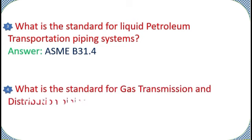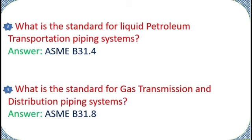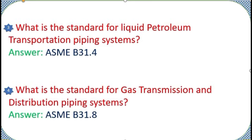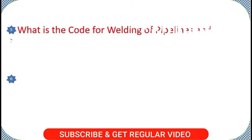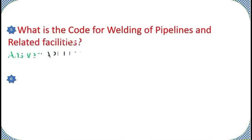What is the standard for liquid petroleum transportation piping systems? Answer: ASME B31.4. What is the standard for gas transmission and distribution piping systems? Answer: ASME B31.8. What is the code for welding of pipelines and related facilities? Answer: API 1104.